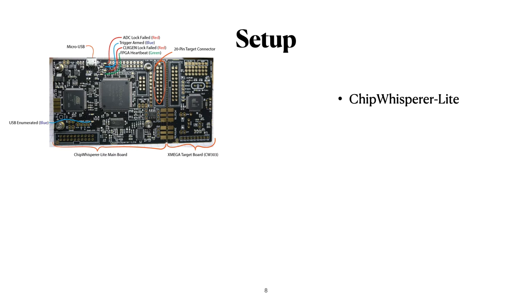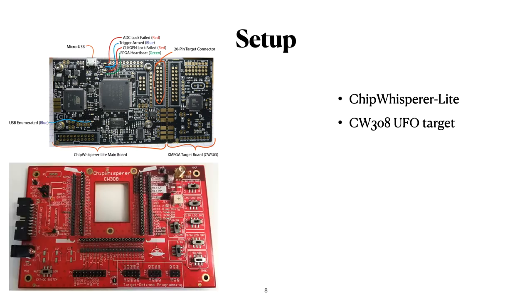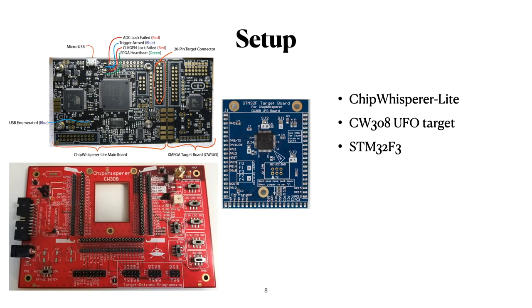During this presentation we will use power traces that we took with a chip whisperer light board. We connected it to the UFO target board with an STM32F3 mounted. So the CPU is a 32-bit ARM Cortex-M4 which we programmed with a C implementation of AES in counter mode. Now in the paper we also use different devices to demonstrate the attack apart from only this device.